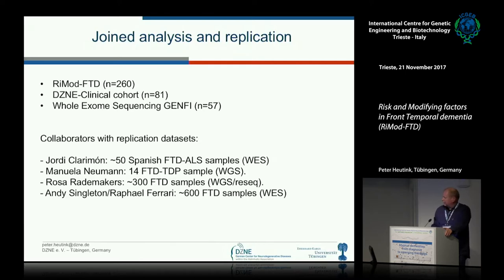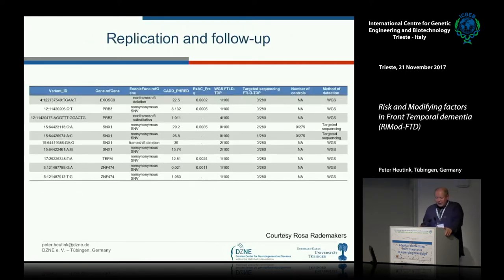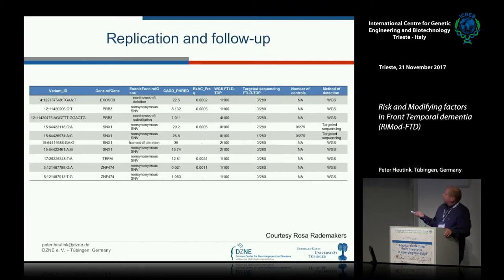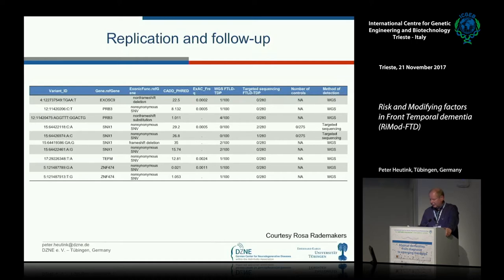That is our current status. For some of the genes found in our initial dataset, we talked with Rosa Rademakers, who found variants in some of those same genes in her data, providing additional evidence that these genes may indeed be important for causing the disease.